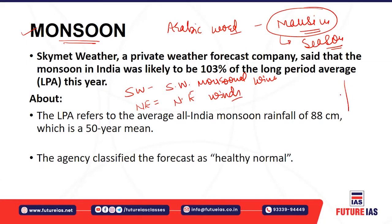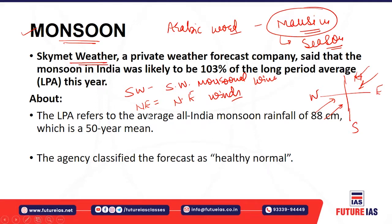If you draw the map you can easily figure this out. The direction is completely reversed from southwest to northeastern. An agency known as Skymet Weather, which is a private weather forecasting company, said that the monsoon this year would be 103 percent of the long-term period average.